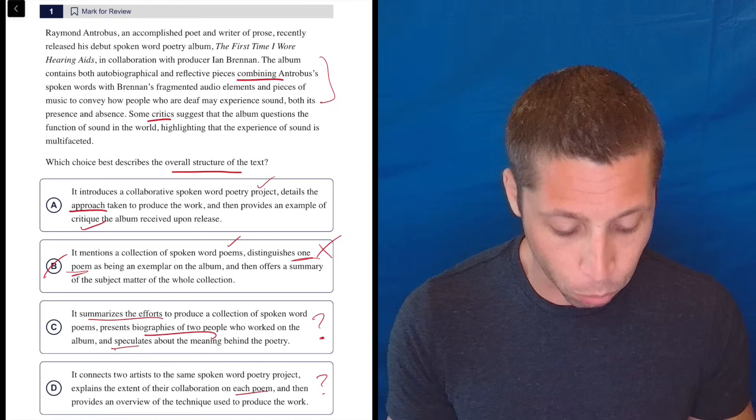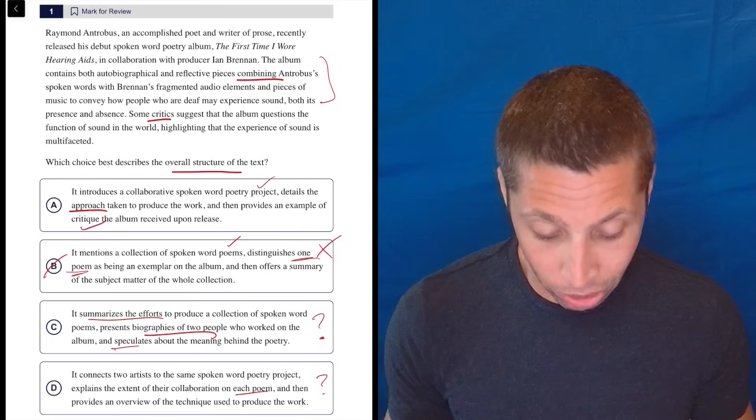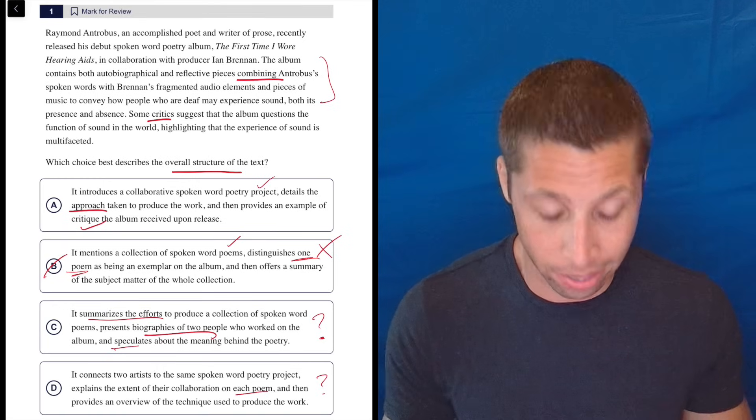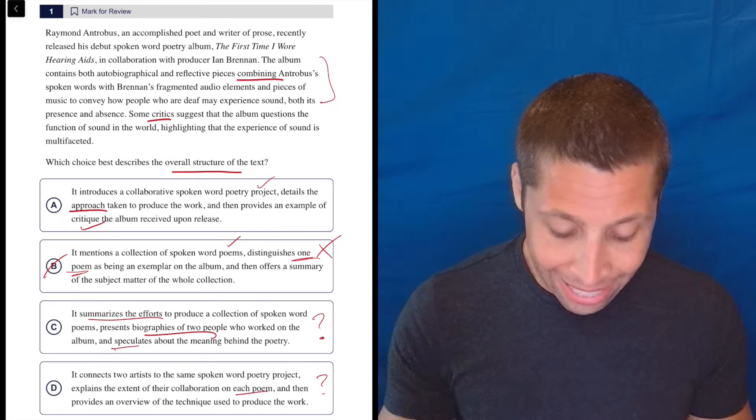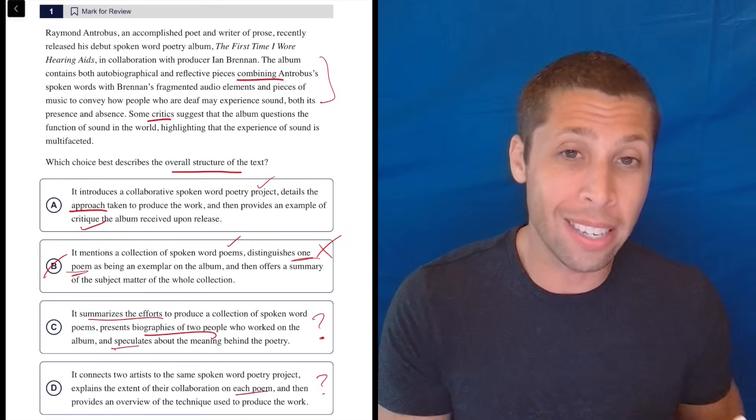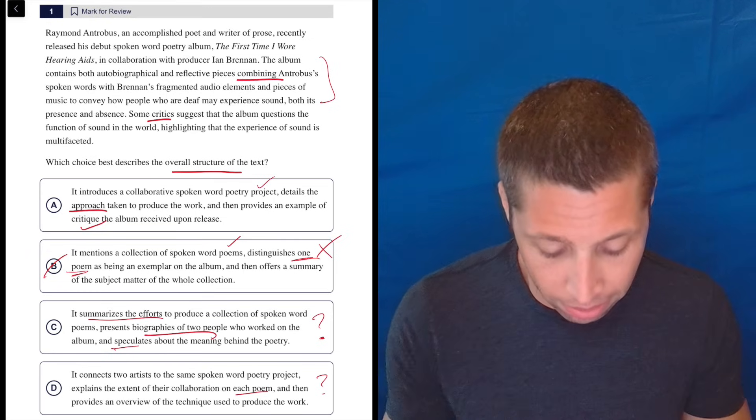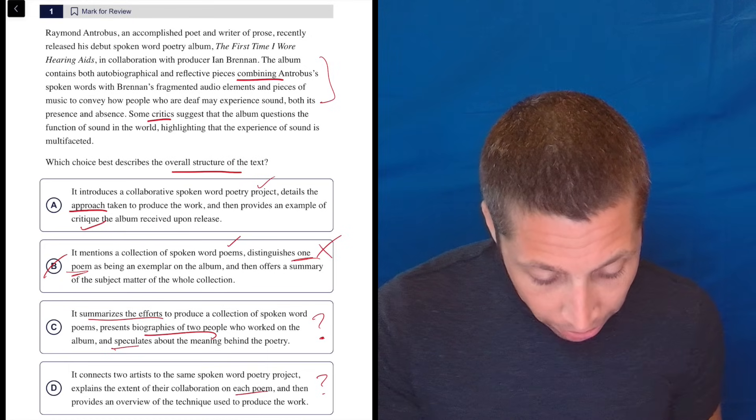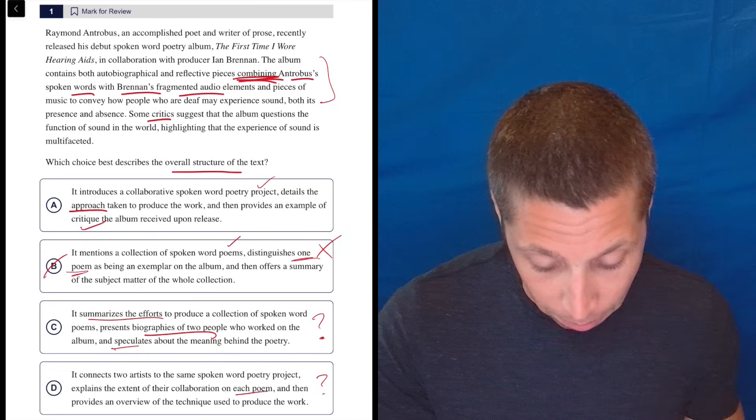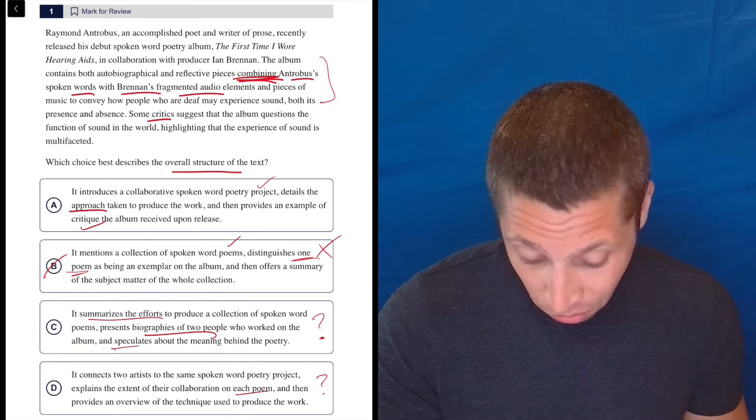It introduces a collaborative spoken word poetry project. What is the spoken word poetry project? It is The First Time I Wore Hearing Aids, which is a collaboration with someone else. So is it collaborative? Is it spoken word poetry? Yeah. All those things are literally just said in that first sentence. So that definitely checks off. Now, does it detail the approach taken to produce the work? This is maybe similar to some of the things I wasn't so sure about in choices C and D. It feels maybe, I got to prove this. So let's see. What is the approach taken? Well, they combined Antrobus's spoken words with Brennan's fragmented audio elements. Is that detailing the approach? I think so. It seems fine to me.